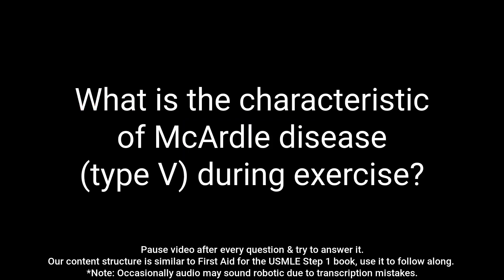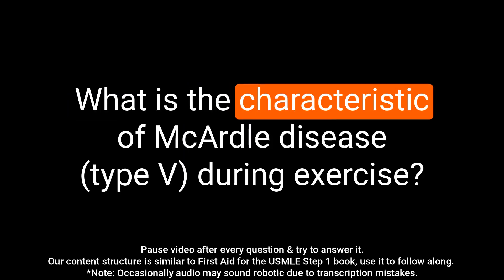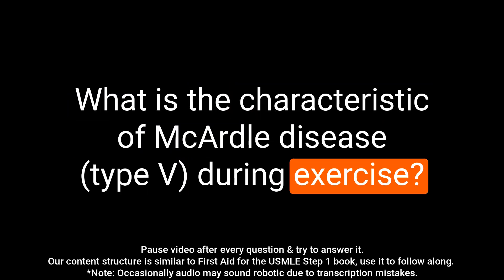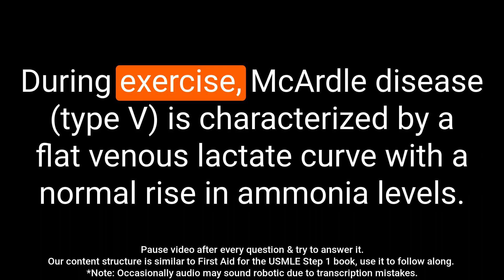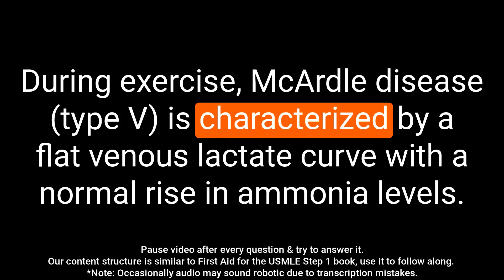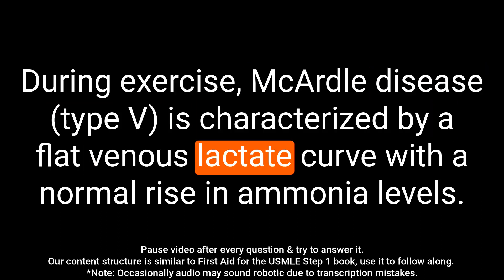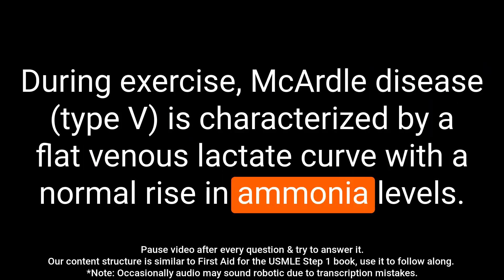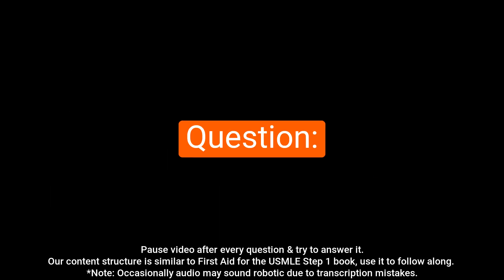Question: What is the characteristic of McArdle disease during exercise? Answer: During exercise, McArdle disease is characterized by a flat venous lactate curve with a normal rise in ammonia levels.